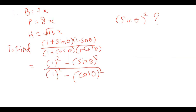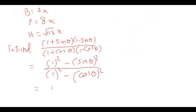Now, sin θ squared — since sin θ is one term — I can write it as (sin θ)² or as sin²θ. So we get: (1 − sin²θ) upon (1 − cos²θ). Now I am going to substitute the values.